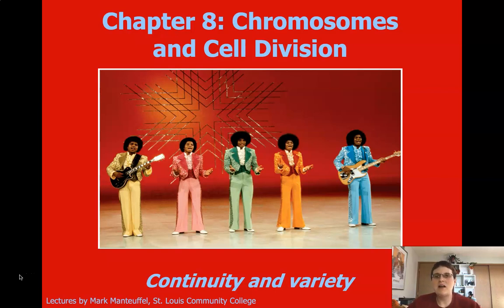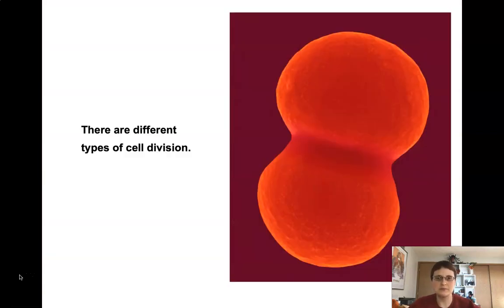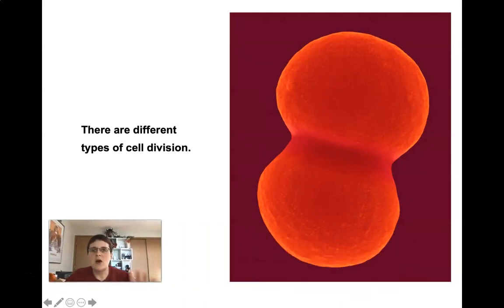Chapter 8 is all about cell division. We're going to talk a little bit more about chromosomes, but mainly what we're going to be talking about as far as chromosomes go is how we're going to be following them throughout the process of cell division. There are three types of cell division we're going to talk about: how prokaryotic cells divide, and then the two ways that eukaryotic cells divide.